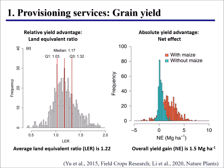On the right, we introduce another metric called net effects, defined as the difference between the intercropping yield and the expected yield from the monocultures. On average overall, the yield gain is 1.5 tons per hectare. So intercropping can indeed increase yield, both in relative and absolute terms.